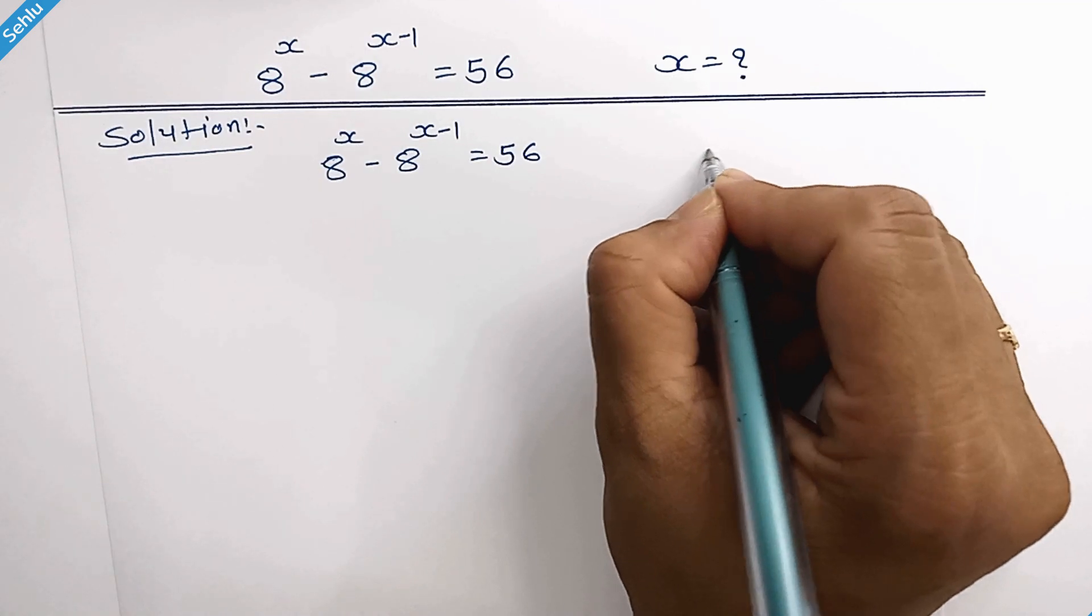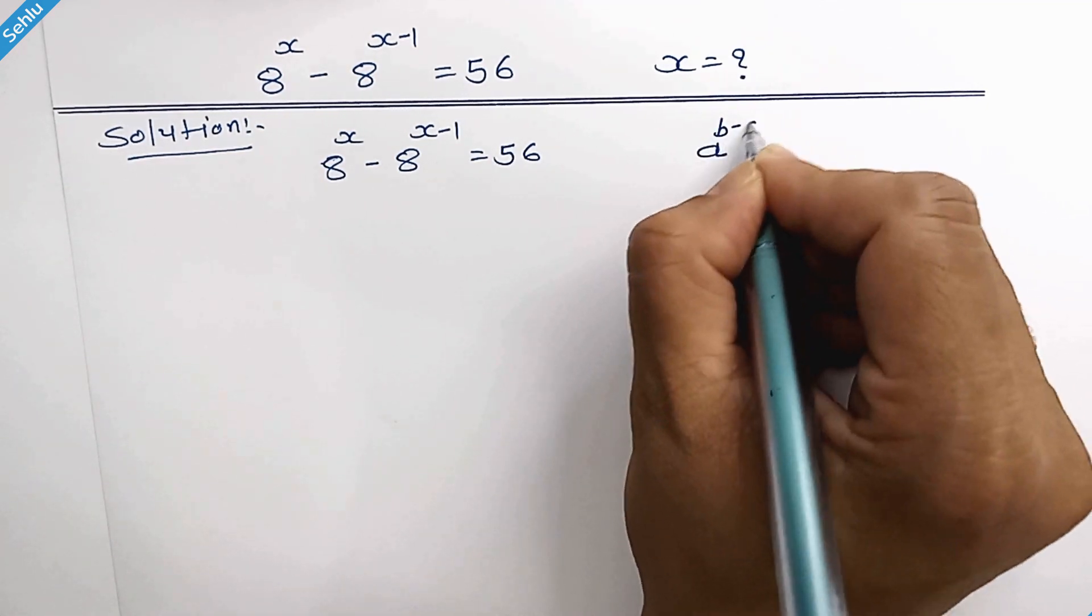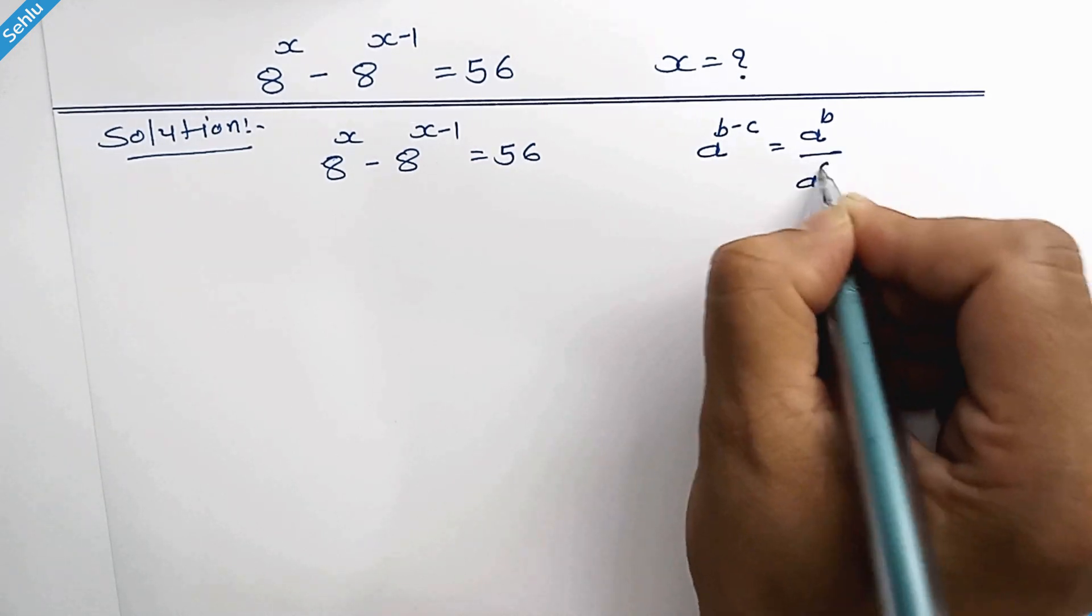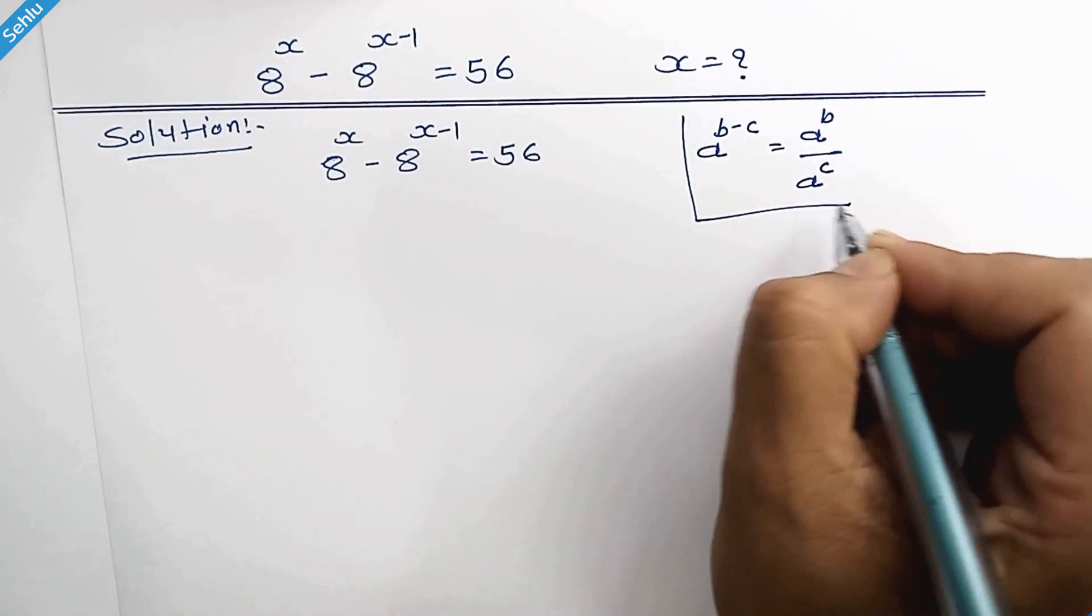In the first step, we will recall a rule: when we have a to the power b minus c, then it can be written as a to the power b over a to the power c. And this will apply here.